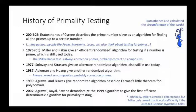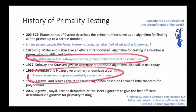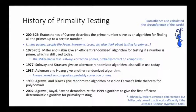At this point, it might be a good exercise to think about how to take these two algorithms, one of which is always correct on primes, probably correct on composites, and the other of which is always correct on composites, probably correct on primes, and turn it into a Las Vegas algorithm that is always correct on all of the numbers, but only probably efficient. Moving forward in time, in 1999, Agrawal and Biswas gave a randomized algorithm based on Fermat's little theorem for polynomials, which we saw in the previous video. In 2002, Agrawal, Kayal, and Saxena derandomized that 1999 algorithm, and that finally gave the first efficient deterministic algorithm for primality testing.